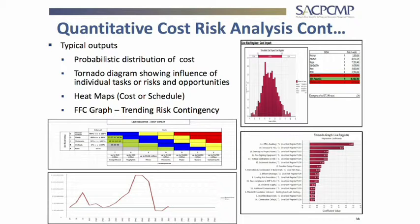We also do an FFC risk contingency graph. The blue lines show the baseline contingency — say 50 million — at project start. Any risk that materializes results in a drawdown from that 50 million. We keep trending our exposure every month or at each risk workshop. If you go to a board meeting and your risk is 300 million against 50 million contingency, that's a 250 million exposure.